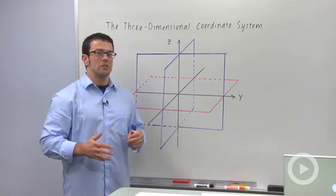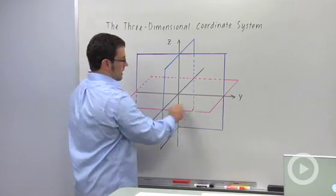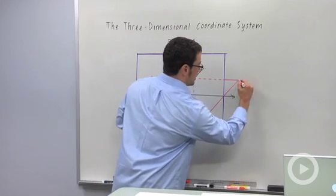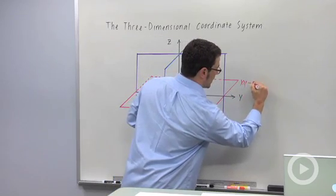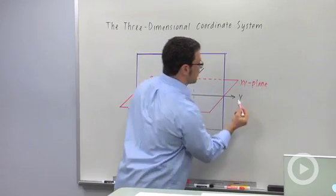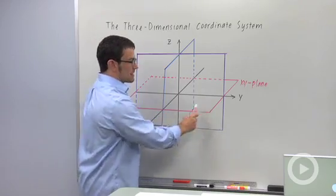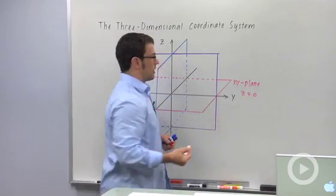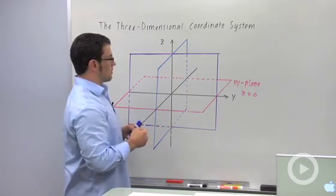And these axes actually themselves create planes. There's the xy-plane, which I've drawn in red here. Let me label that xy-plane. Now every point on the xy-plane has a z-coordinate of 0, so it's also called z equals 0. That's an identifying characteristic for the plane, so that's an equation for the plane.